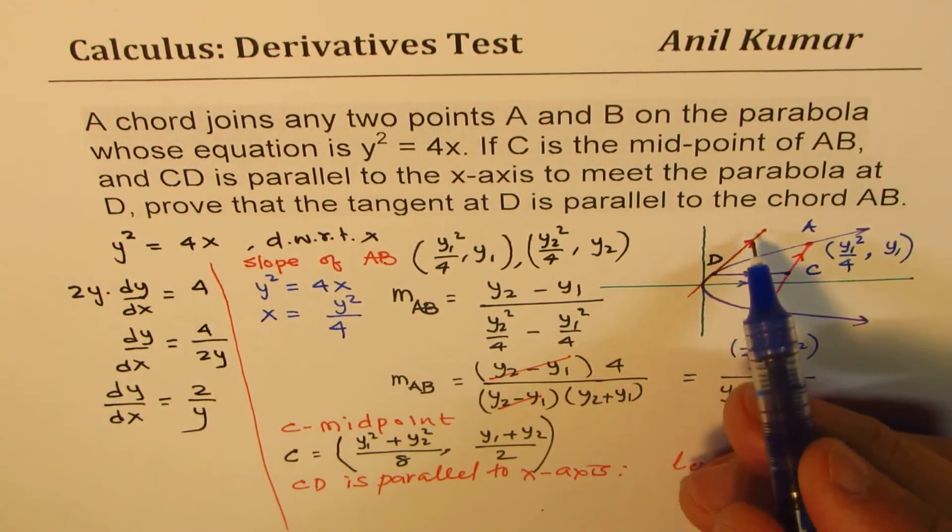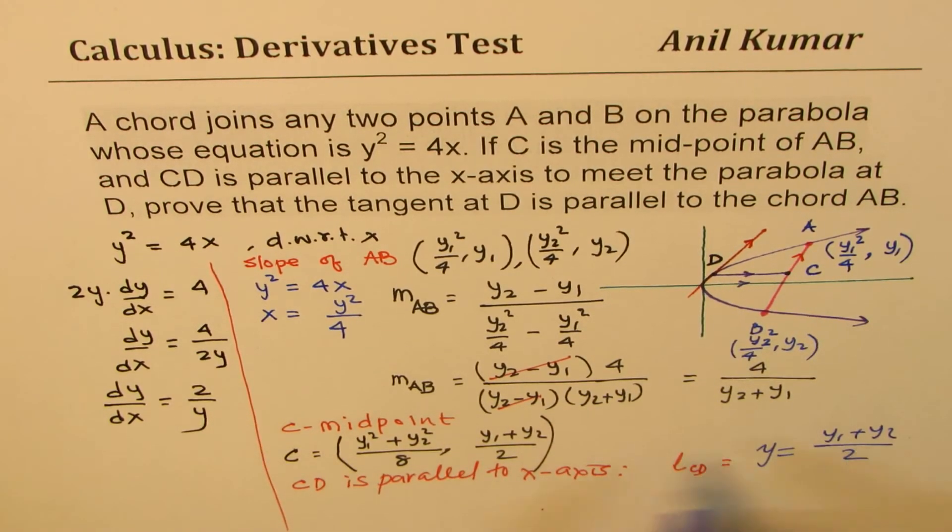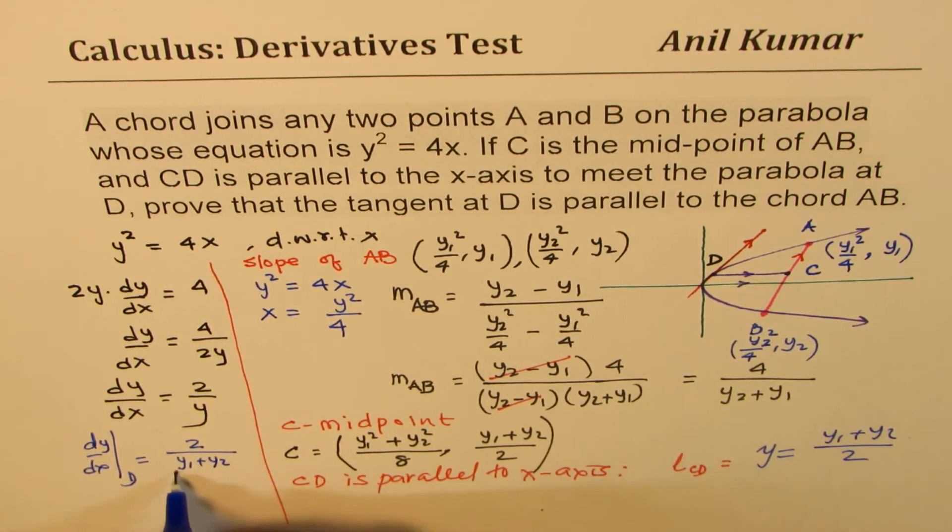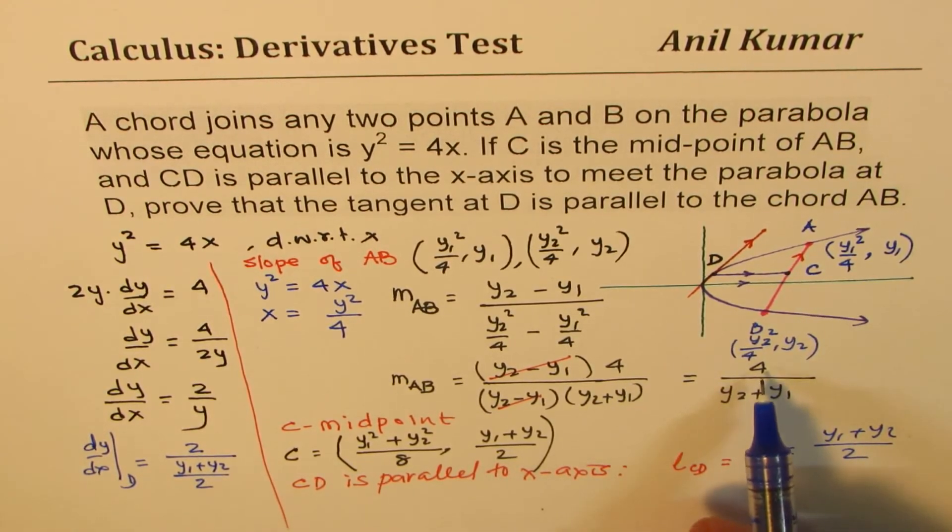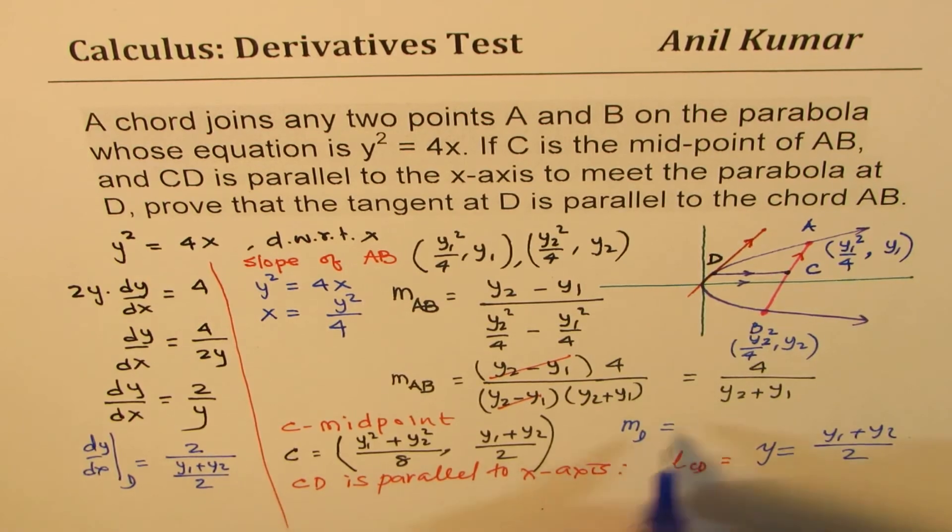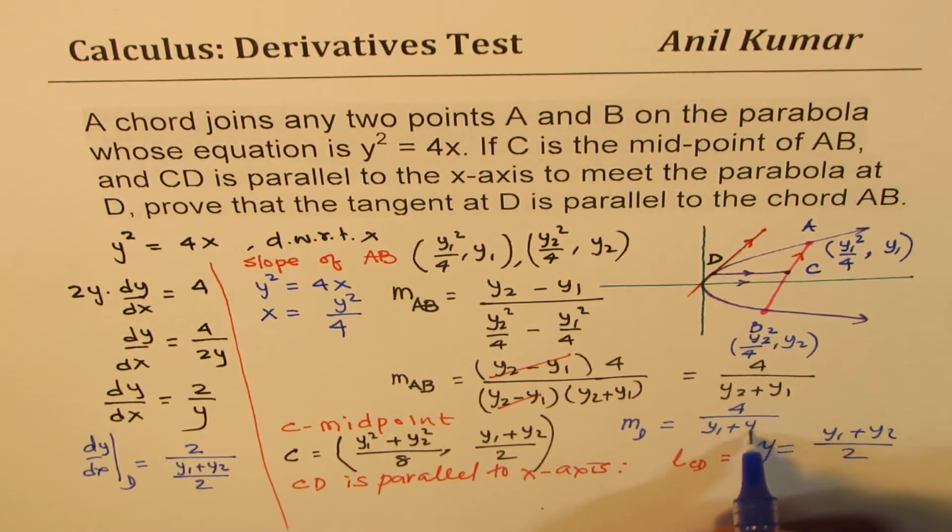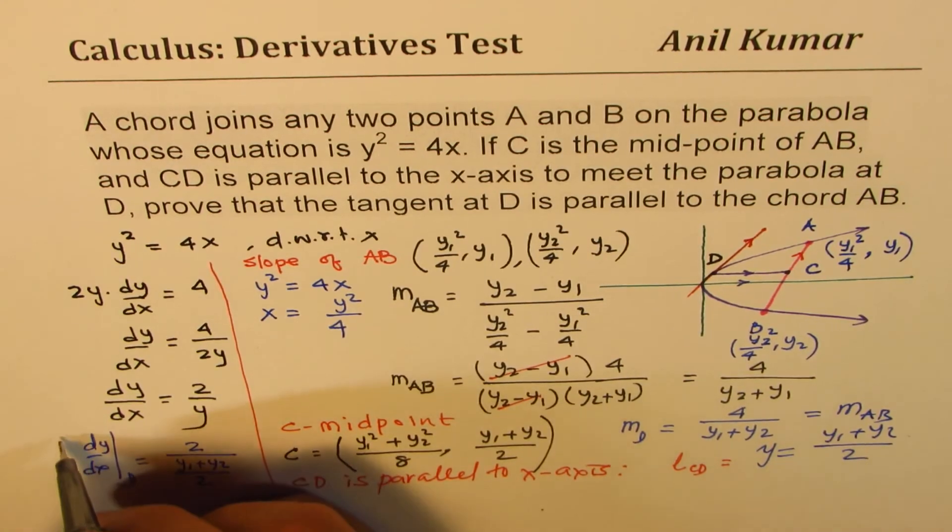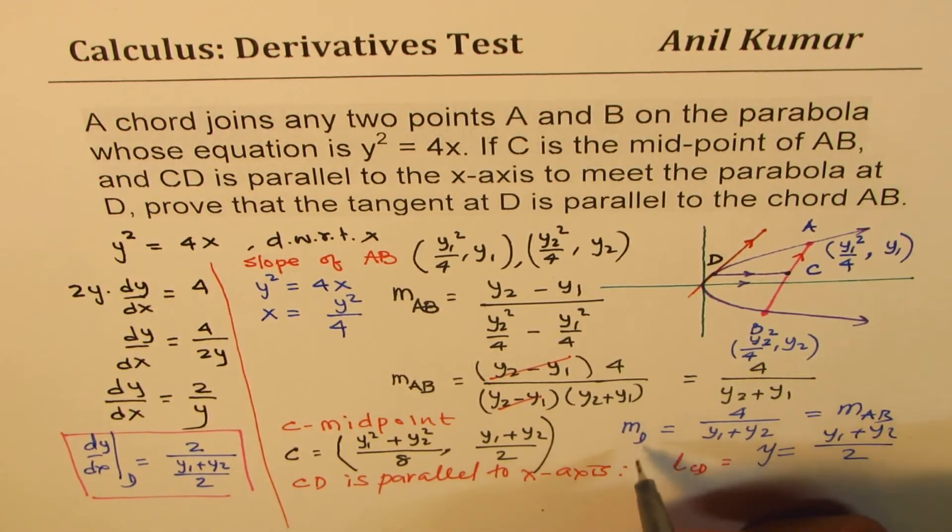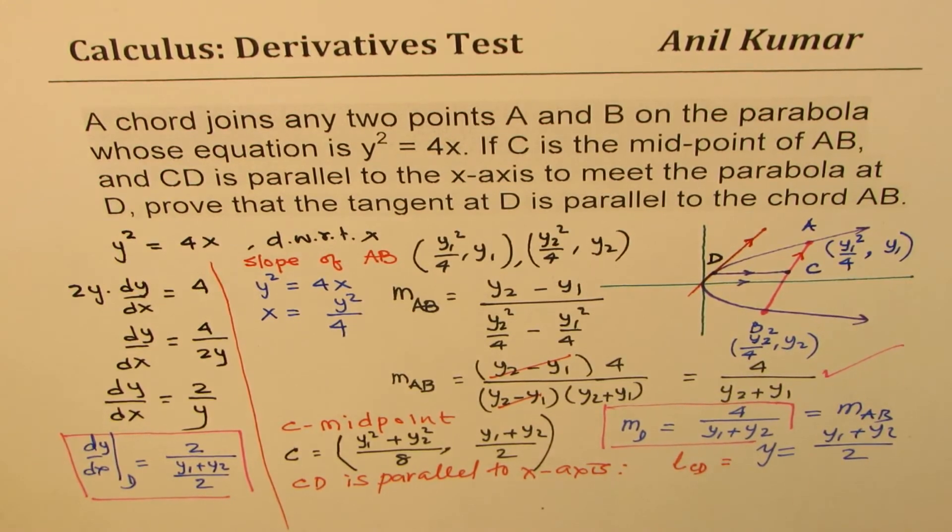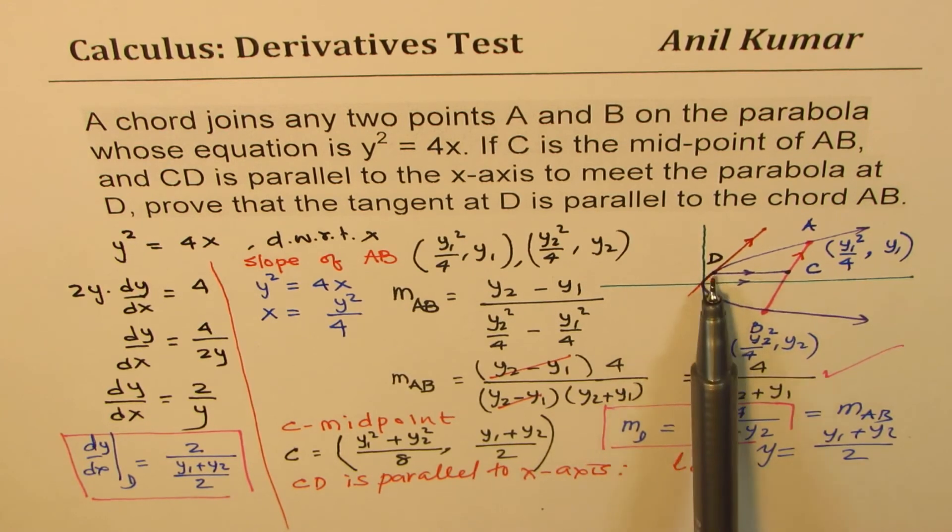If that is the case, what is the slope of tangent at D? Well, we can just plug this in here. So we say dy/dx at D equals 2 over this y value, which is (y₁ + y₂)/2. And that is indeed equals to 4/(y₁ + y₂). So now slope at D is 4/(y₁ + y₂), which is same as the slope of AB.